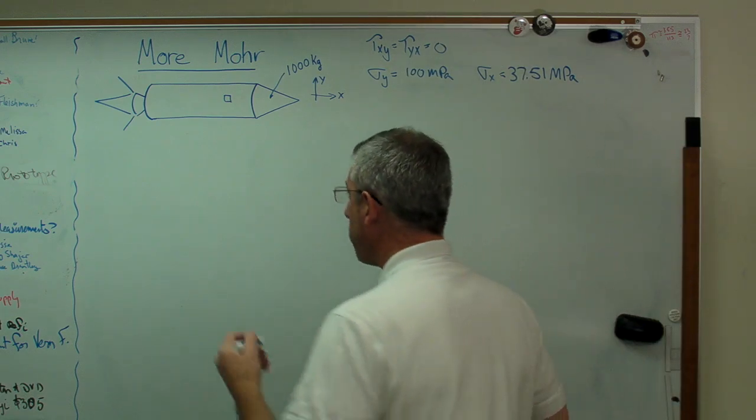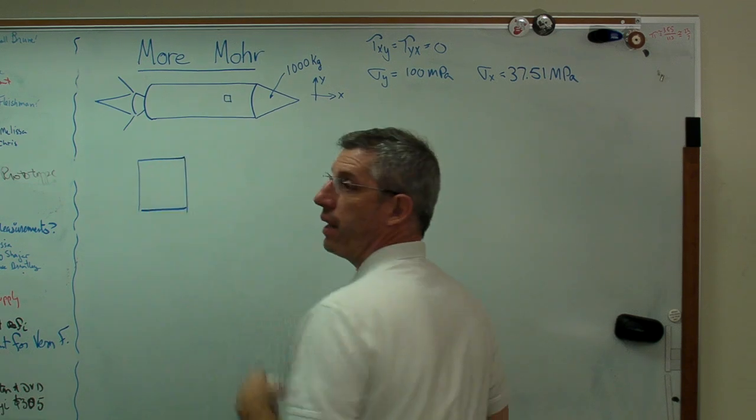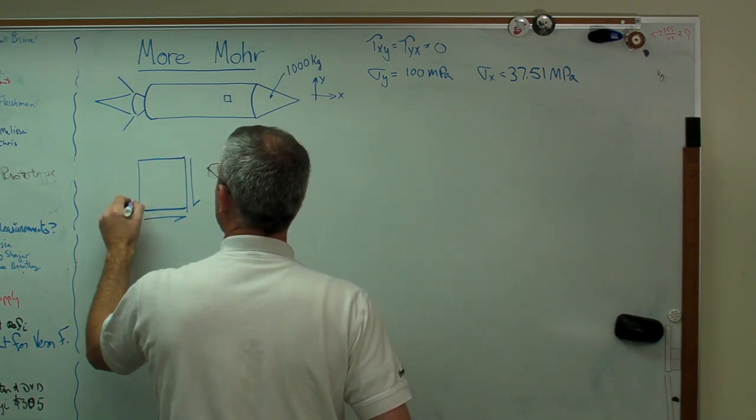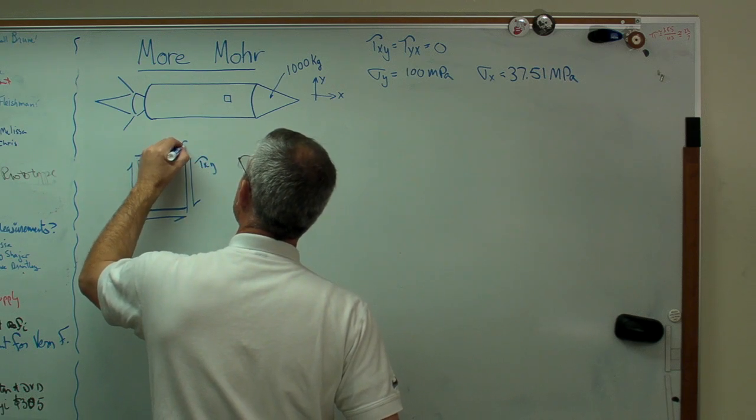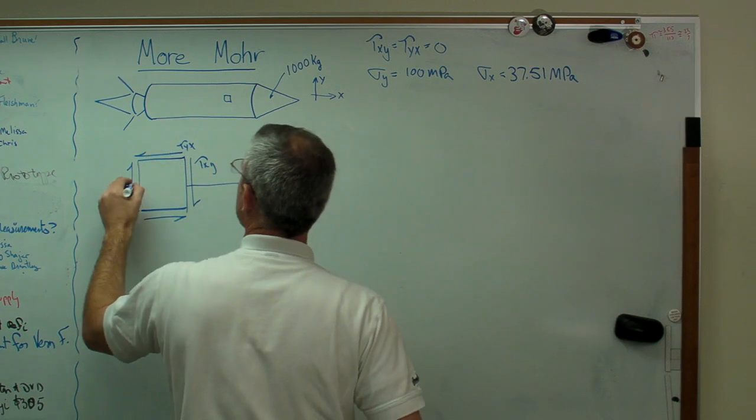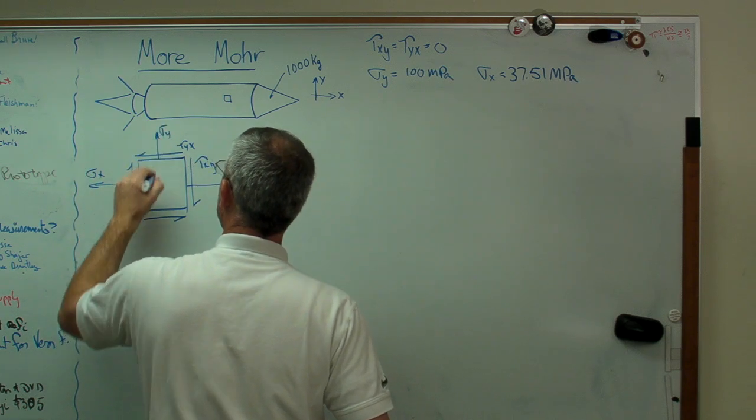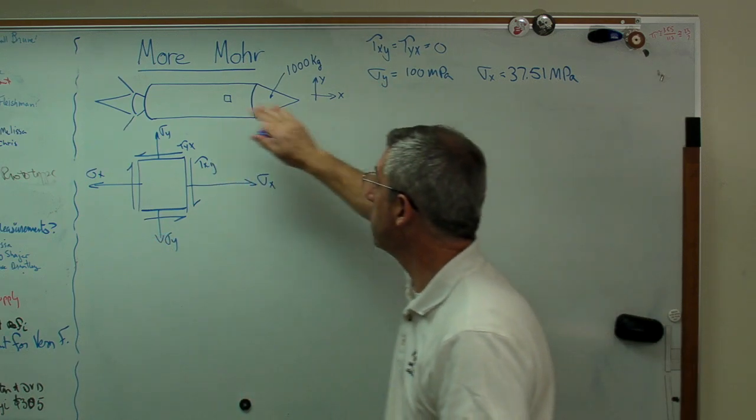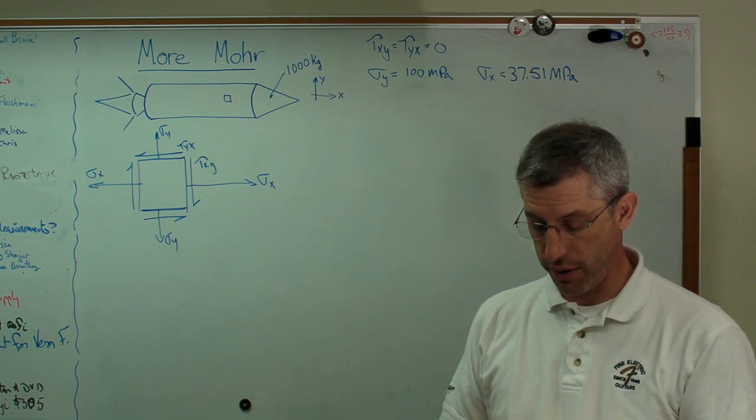Let's draw the stress element first. That's this box right here, just blown up big so we can see it and write on it. There's the nominal directions of tau xy and tau yx, and those are both zero. There's sigma x and sigma y. In this direction, there is no shear stress. That doesn't mean there's no shear stress in any direction.